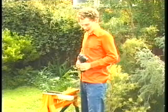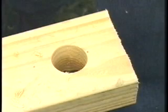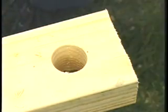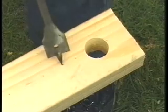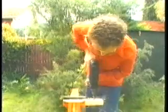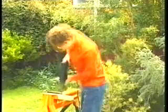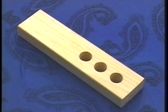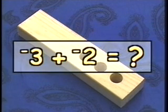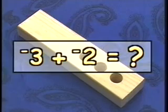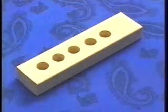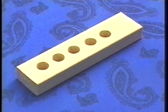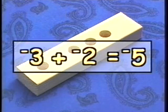Now it's time to look at how we add integers. I'm drilling holes to represent negative numbers — let's assume the top surface of this wood block equals zero. I've drilled one hole — that's negative one. Now here's another one, negative two. I've made three holes, so that's negative three. Look at this calculation: negative three add negative two — that's just adding two more holes, which makes five holes altogether. Negative three add negative two equals negative five.